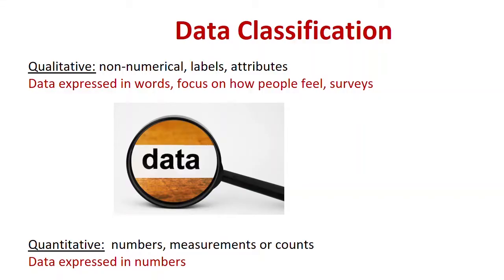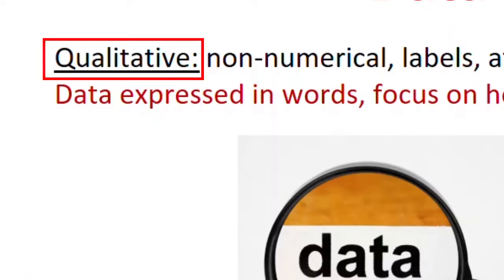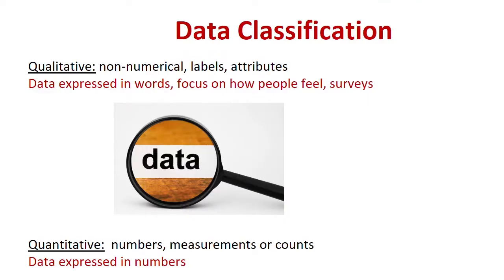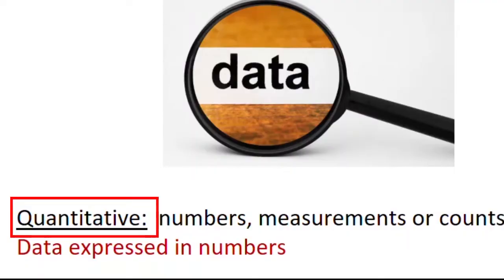There are two types of data. Qualitative data consists of attributes and labels — non-numerical entries really. This is data expressed in words. It focuses on how people feel, things like surveys.